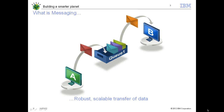This communication can be synchronous or asynchronous. We call it synchronous when both applications are alive and sending and receiving messages. It is asynchronous when A sends messages when B is not currently running or available, but when B comes up, it can receive all those messages and data. That's where we call it asynchronous.